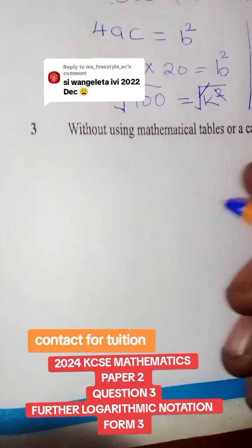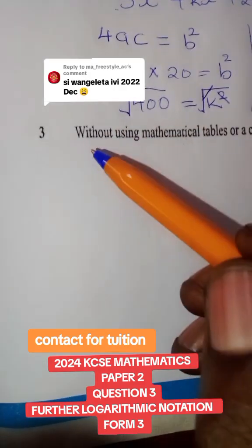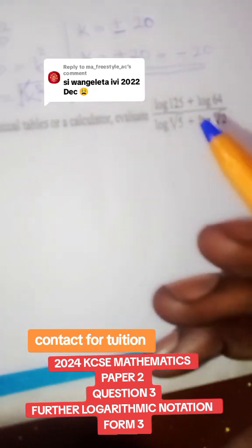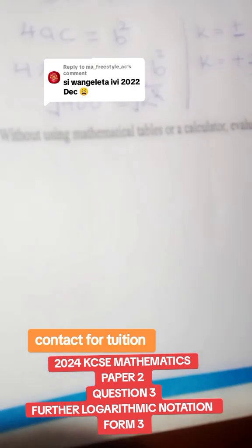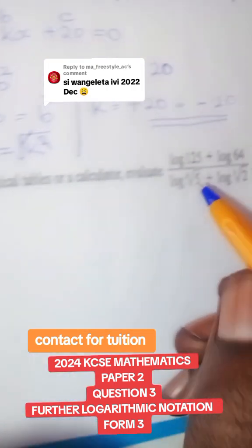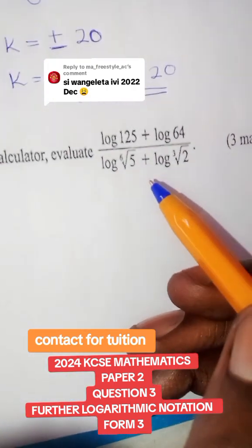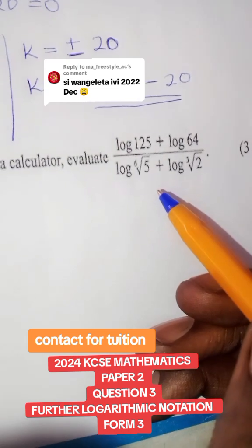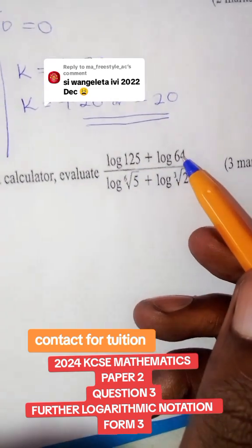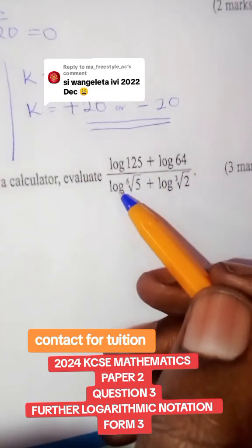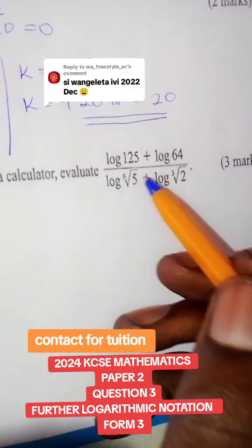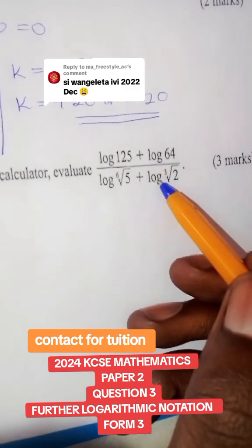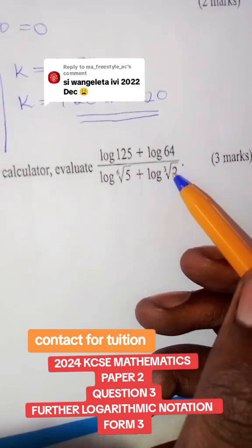Hello friends, welcome on board as I guide you through question 3, KCSE 2024 paper 2. You are told, without using a mathematical table or a calculator, you are supposed to evaluate this equation: log 125 plus log 45, over log the 6th root of 5, plus the cube root of 2.